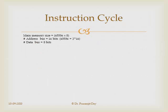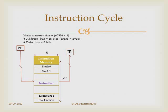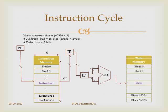Let us explain the instruction cycle with a block diagram. Consider a memory of size 65536 × 8; thus the address bus size is 16 bits and the data bus is 8 bits. Initially the program counter gets the address of the instruction, then fetches the instruction from instruction memory. After the instruction is loaded into the instruction register, data goes to the instruction decoder where it is decoded, and depending on the instruction, operands are generated and fed into the ALU. The ALU performs an operation and stores the result into data memory.